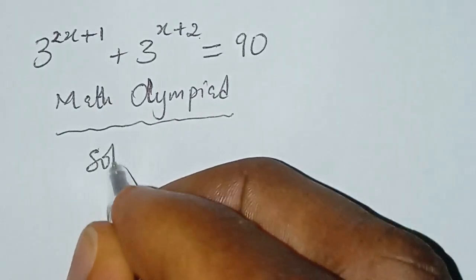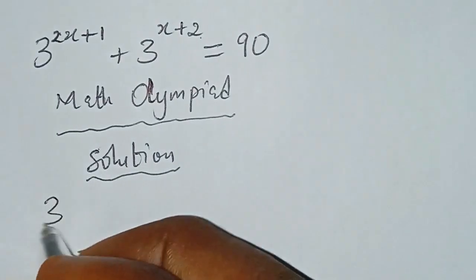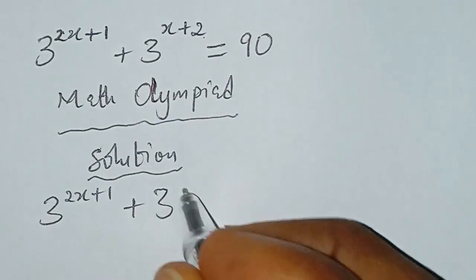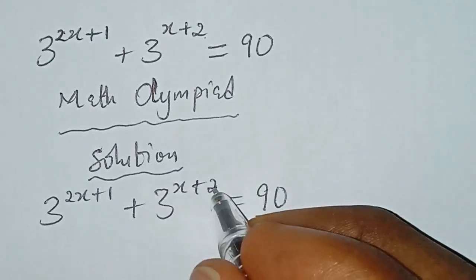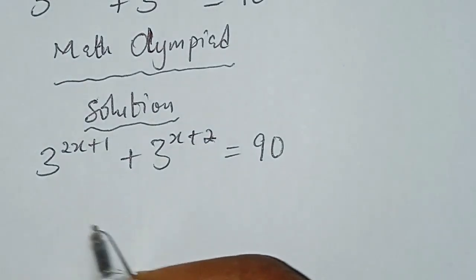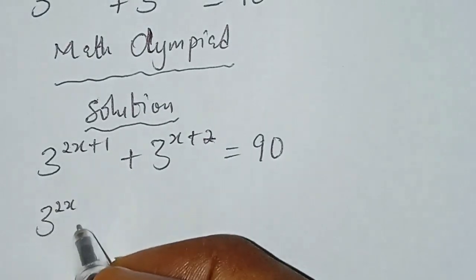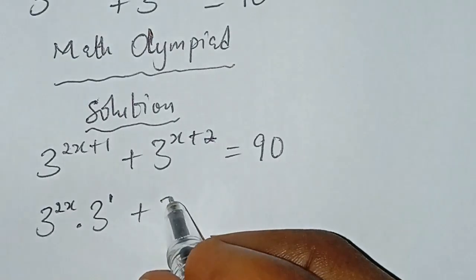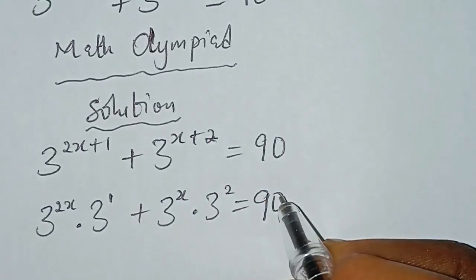Solution. We have 3 to the power of 2X plus 1, plus 3 to the power of X plus 2, everything equal to 90. What we do first is split these terms. So we have 3 to the power of 2X multiplied by 3 to the power of 1, plus 3 to the power of X multiplied by 3 to the power of 2, equal to 90.